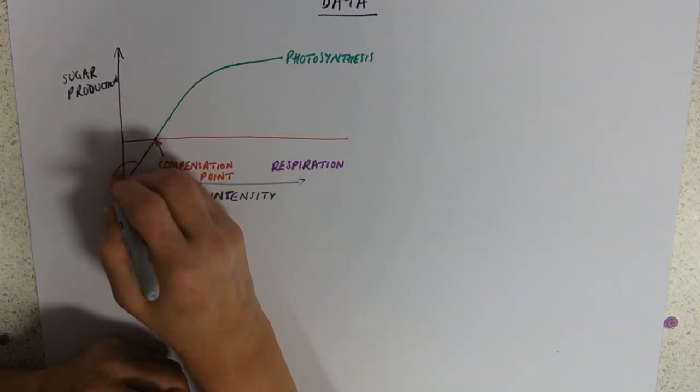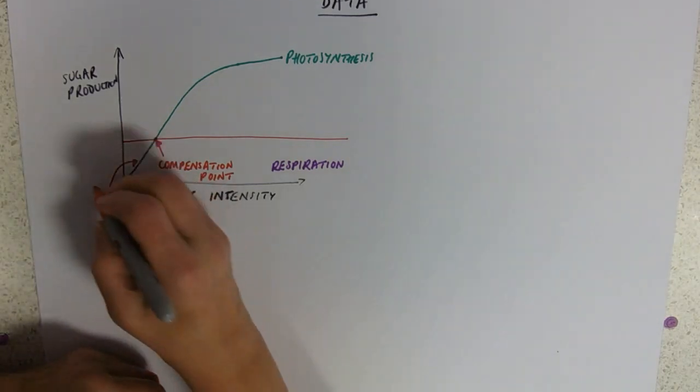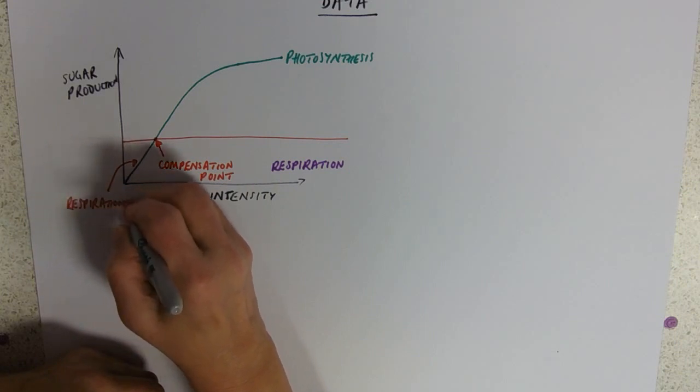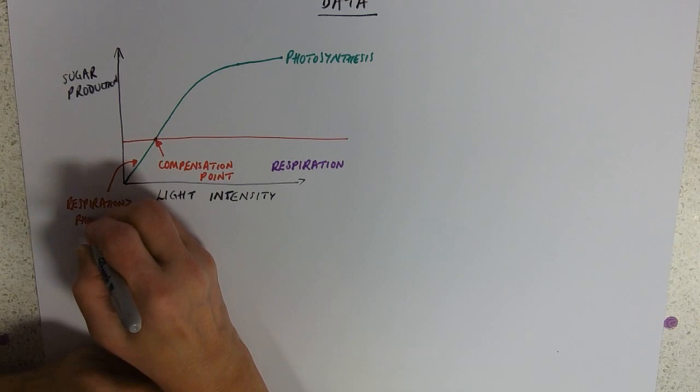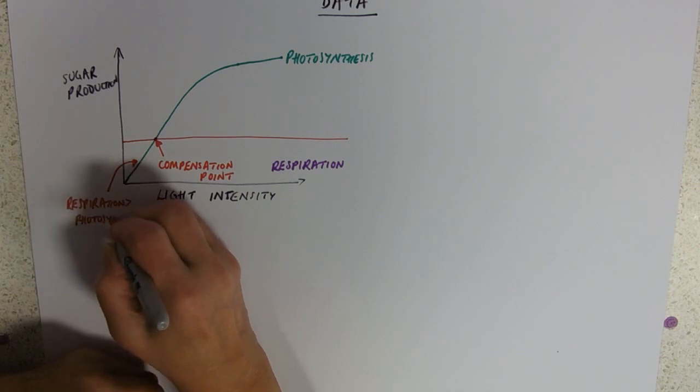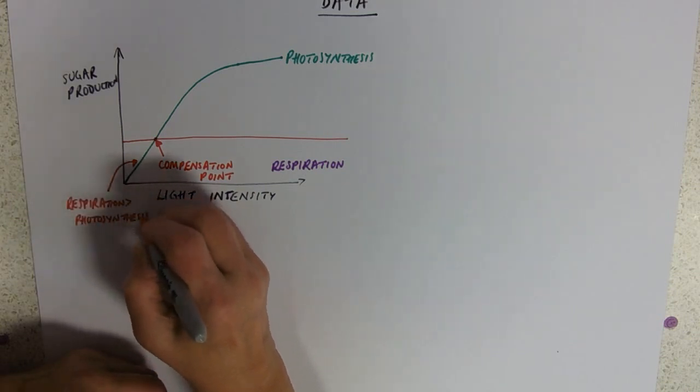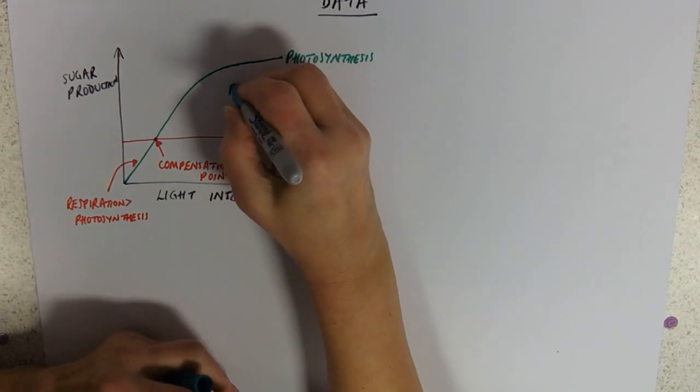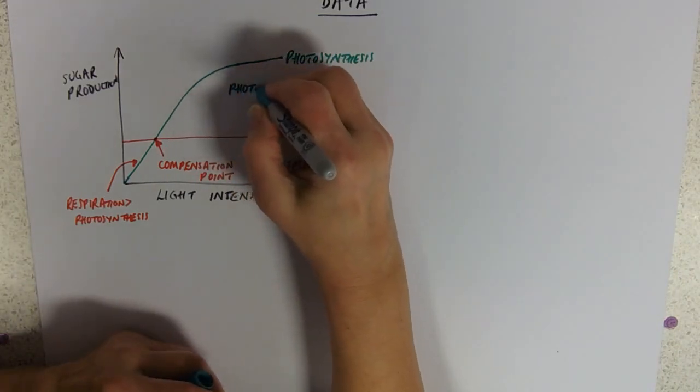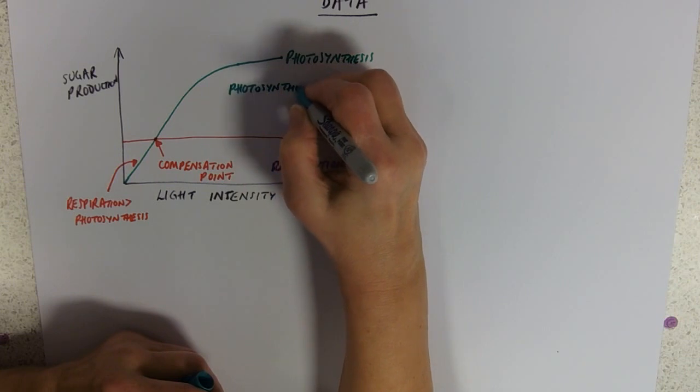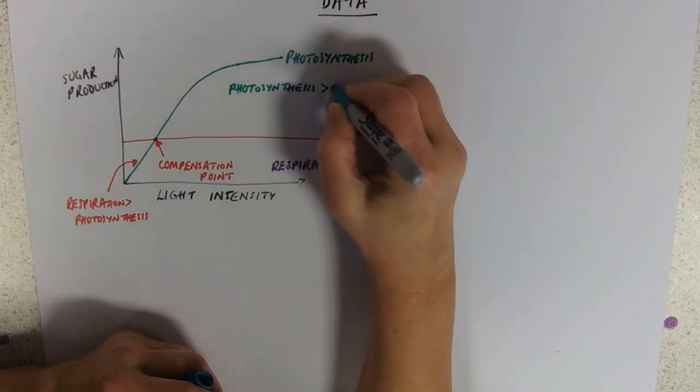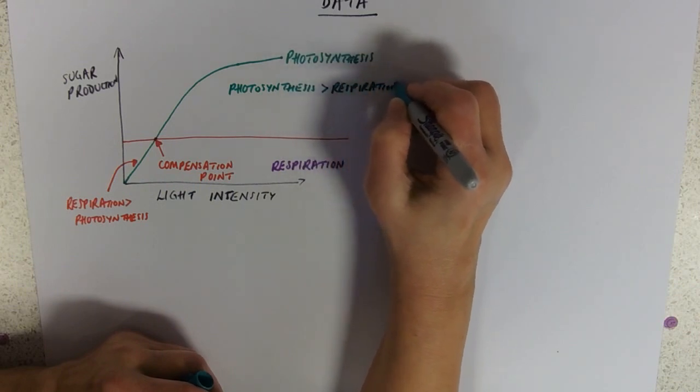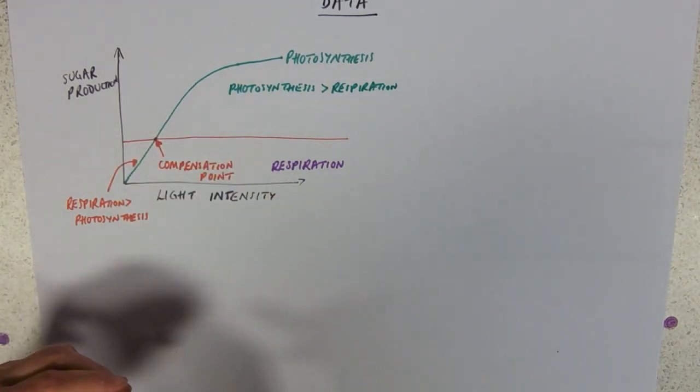What that really means is here, underneath the compensation point, you're using up more sugar in respiration then you're producing in photosynthesis. Up above the compensation point, you're making more sugar then you're using up in respiration. And where they're equal, you've got the compensation point.